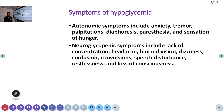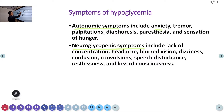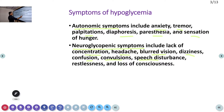The symptoms of hypoglycemia have two important types. One is autonomic symptoms and the other is neuroglycopenic symptoms. Autonomic symptoms include anxiety, tremor, palpitation, diaphoresis, paresthesia, and sensation of hunger. Neuroglycopenic symptoms include lack of concentration, low GCS, headache, blurred vision, dizziness, convulsion, confusion, and other CNS manifestations.